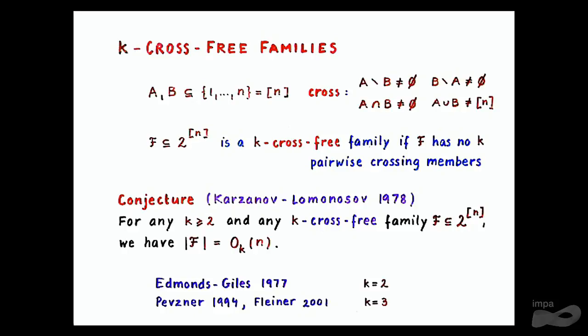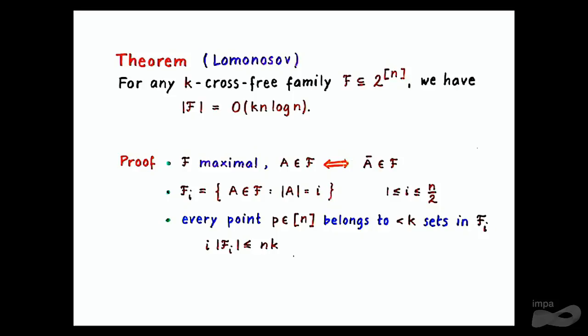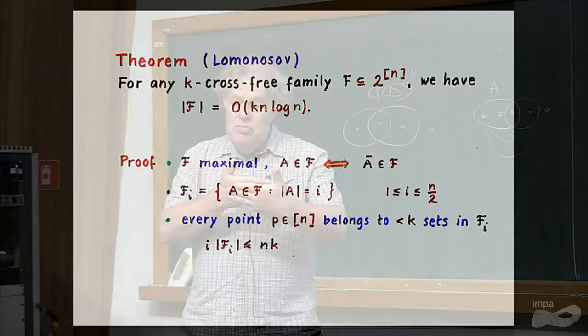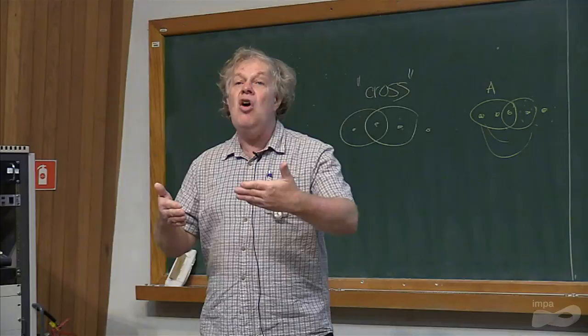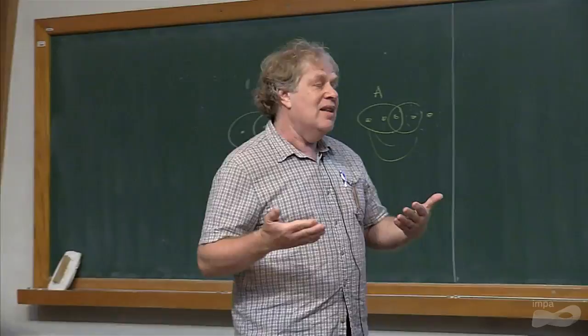There is something that Lomonosov immediately observed: instead of a linear upper bound, it's very easy to prove an N log N upper bound. If you take a maximal family with no K pairwise crossing sets, you can assume that with every set its complement also belongs to the family, because adding the complement won't create any new pairwise crossing sets — if A and B cross each other, it is equivalent to saying A and the complement of B cross each other.